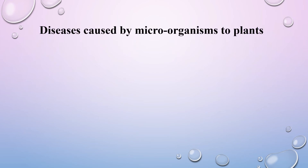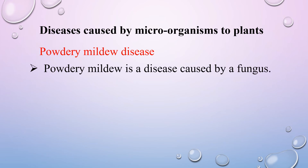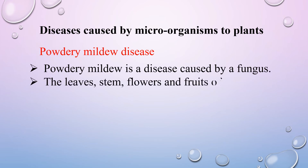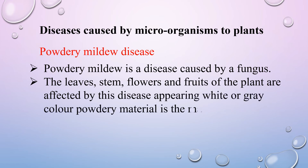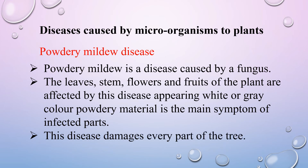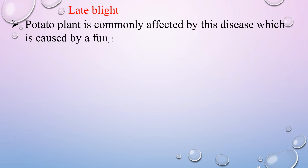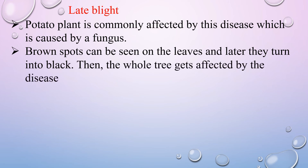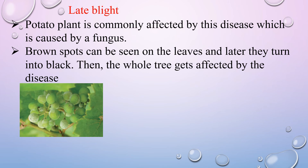Microorganisms also cause diseases in plants. The first plant disease is powdery mildew, caused by a fungus, which affects the leaves, stem, flowers, and fruits of a plant. The main symptom is the appearance of white or grey powdery material on infected parts, and it damages every part of the plant. The next disease is late blight, which commonly affects the potato plant and is caused by a fungus. Brown spots appear on the leaves and later turn black, until the whole plant is affected.